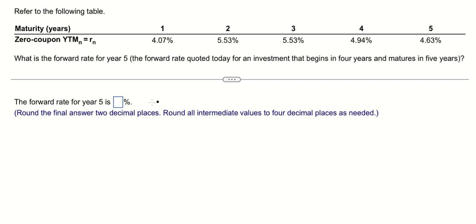The question asks to find the forward rate of year number five. That is this one. Here is the formula.